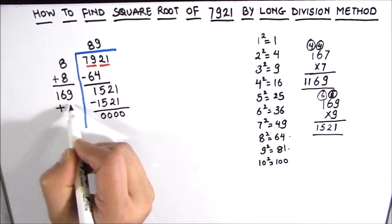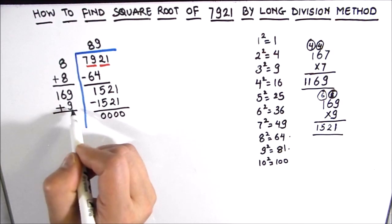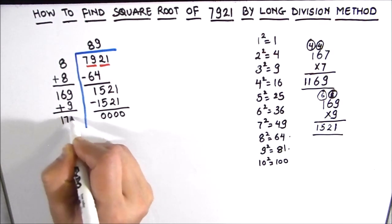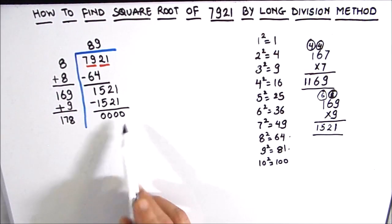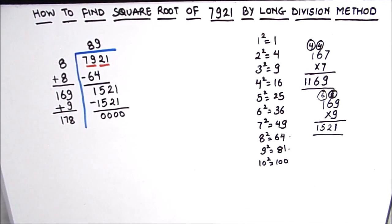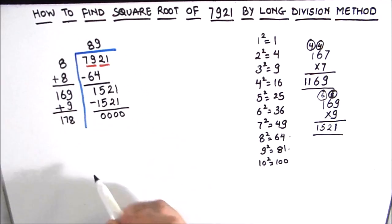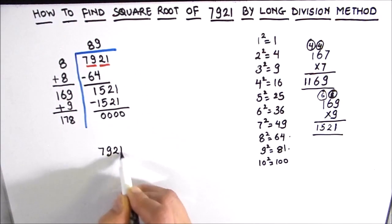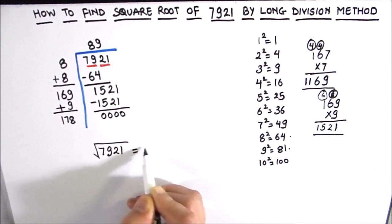For the new divisor we add 9 to 169 to get 178. Since the remainder is zero, we stop here. The number in the quotient is our square root — so the square root of 7921 is 89.